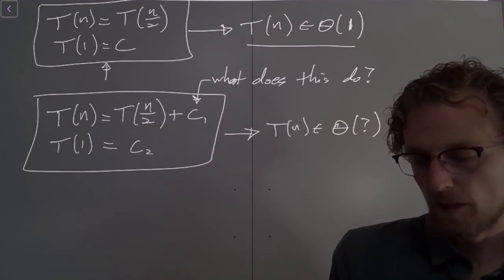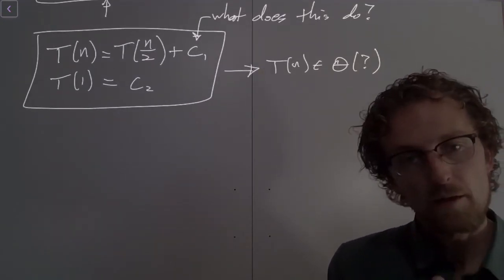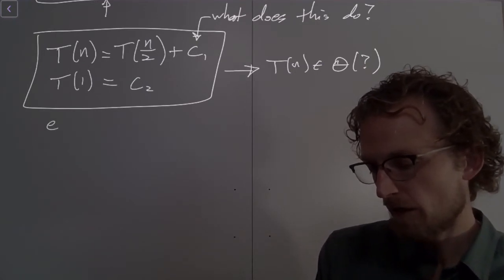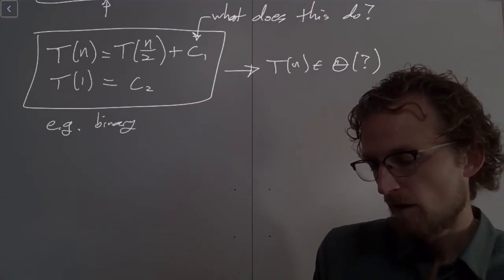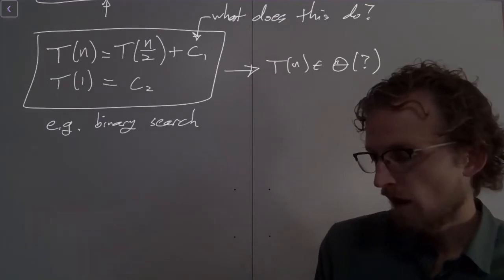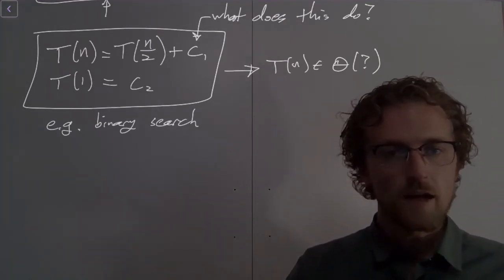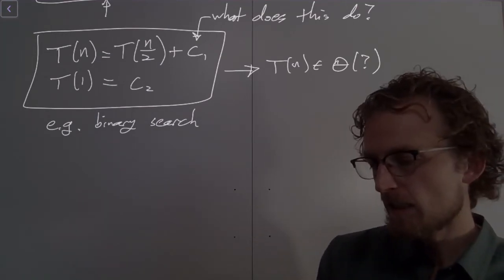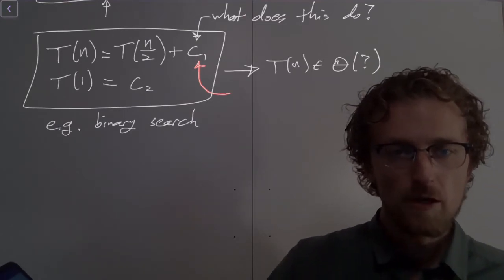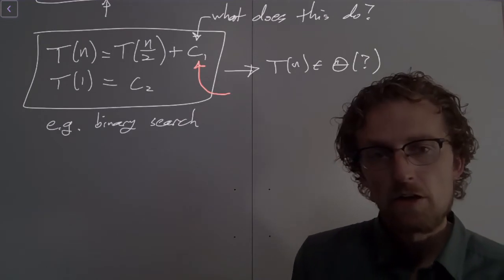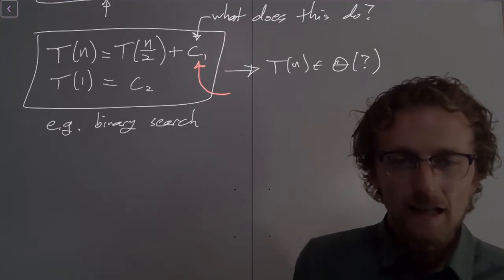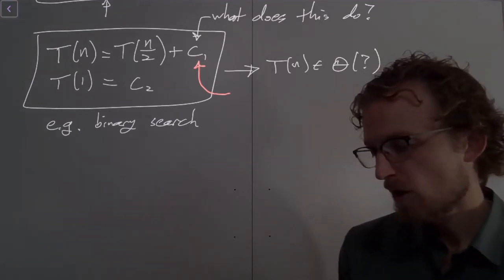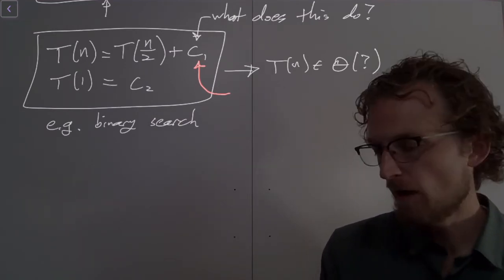Now let's walk away from our old recurrence relation and just focus on the new one and think about what kind of algorithm this is describing. Well, this is describing an algorithm like binary search. So my key example here is binary search. The way binary search works is you give it an array of size n, and then it only looks at half of that array. It essentially recurses on half of that array. And it takes a constant amount of time to figure out which half of the array it needs to recurse on. So it cuts the input in half every time it recurses. But it needs to spend a little bit of effort to figure out how to cut it in half. A little bit of overhead required to actually figure out how to do the split.